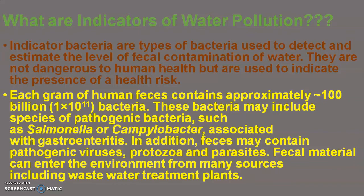Normally, each gram of human fecal matter consists of approximately 1 billion bacteria, that is 1 × 10¹¹ bacteria. These bacteria are of different types that may include pathogenic bacteria such as Salmonella or Campylobacter, associated with gastroenteritis. In addition, fecal matter also consists of pathogenic viruses, pathogenic protozoa, and other parasites. This fecal material can enter the environment from different sources including wastewater treatment plants, and can contaminate water used for drinking purposes.